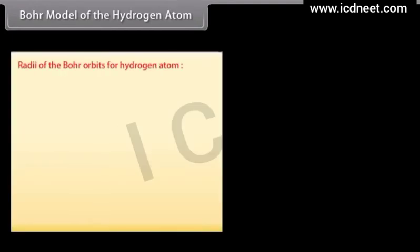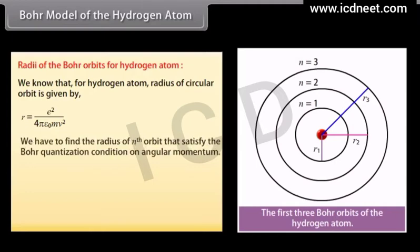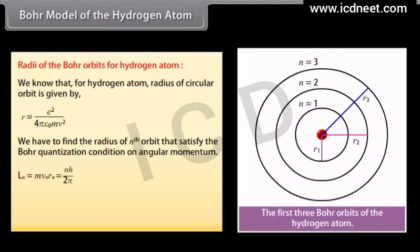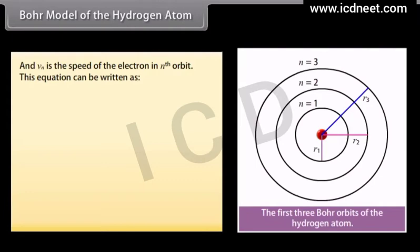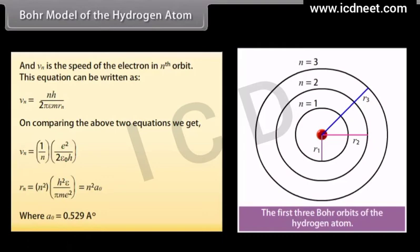For the hydrogen atom, the radius of a circular orbit is given by r = e²/(4πε₀mv²). Applying Bohr's quantization condition on angular momentum, Ln = mVnRn = nh/2π, where n = 1, 2, 3... and Vn is the speed of the electron in the nth orbit. Combining these equations, Vn = (1/n) × e²/(2ε₀h), and Rn = n² × h²ε₀/(πme²) = n²a₀, where a₀ = 0.529 Angstrom.